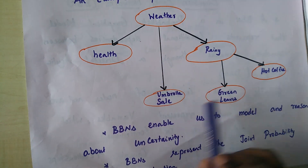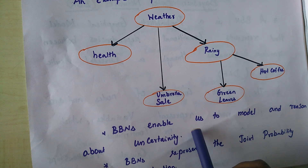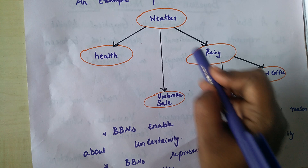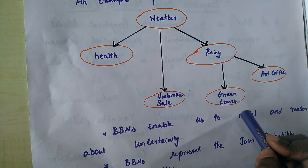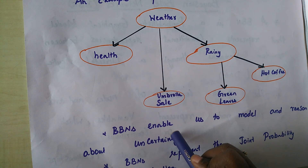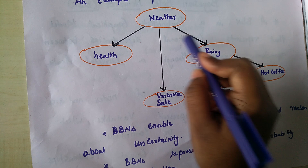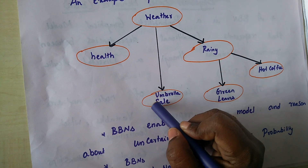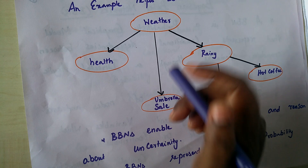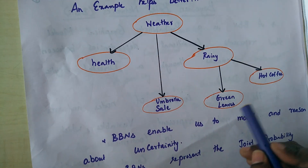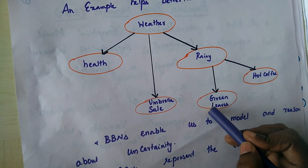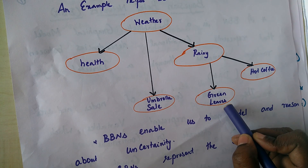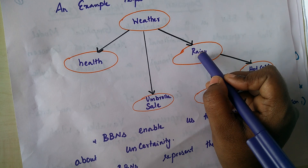When we represent these random variables and capture the dependencies between them, we can make out the reasoning and the uncertainty hidden between them. For instance, we can predict umbrella sales depending on the probability of the weather. Similarly, the probability of green leaves showing up is high when it is a rainy season.